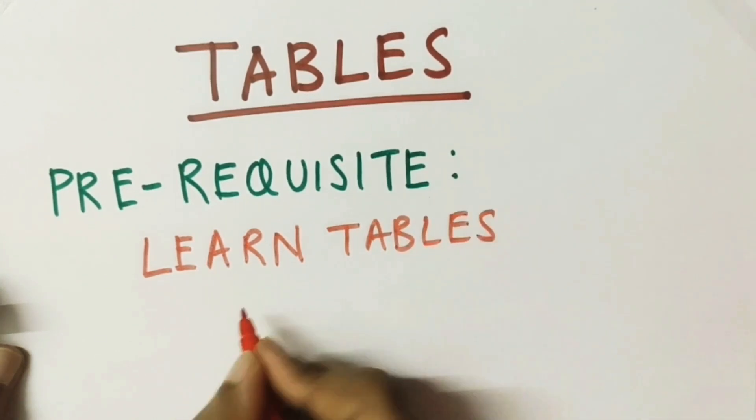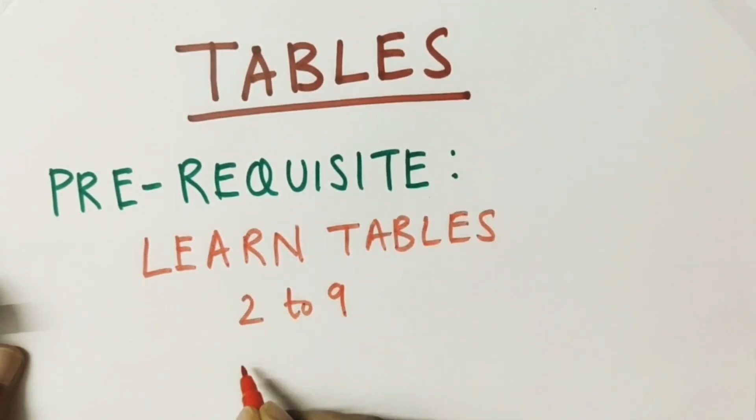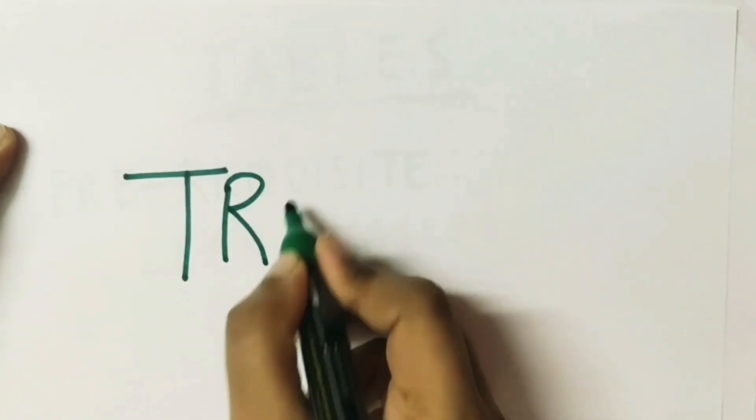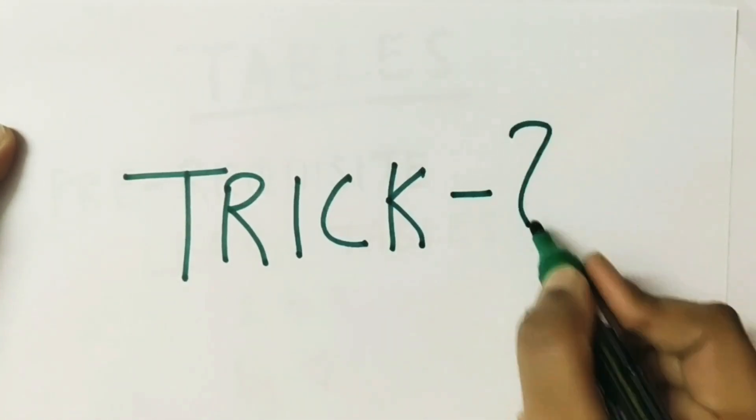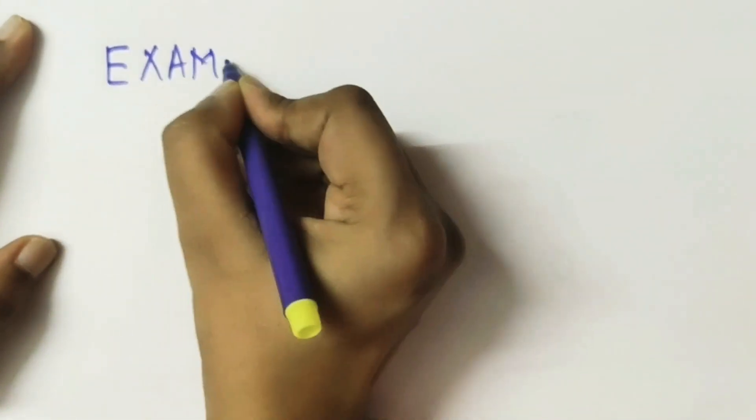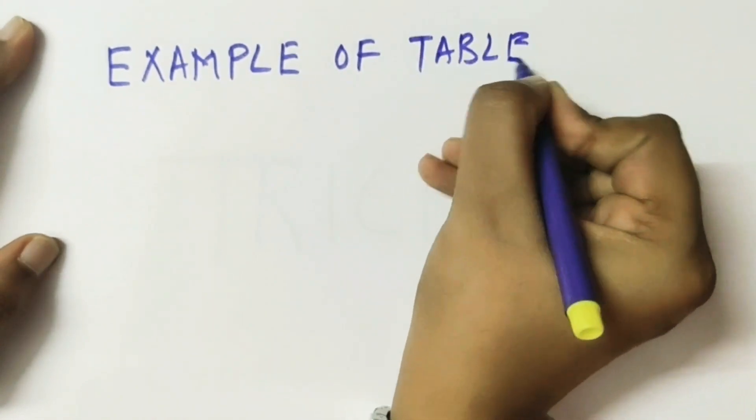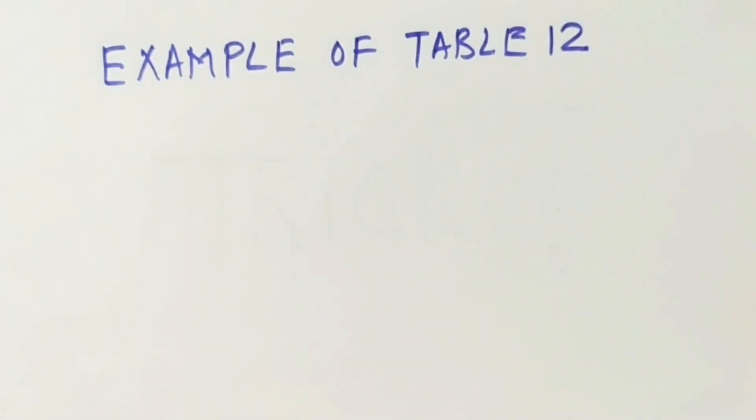Learn tables from 2 to 9 by heart. What's the trick behind it? Let's see it by taking some examples. Example of table 12. So here we are writing table of 1, then we will write the table of 2.